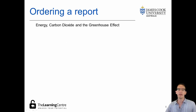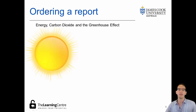Let's imagine that you are writing a report on energy, carbon dioxide and the greenhouse effect. In your reading, you turn up lots of different information from lots of different sources. But when it comes time to write the report, you need to put them in a logical order. So a good place to start might be with the sun and radiation from the sun and the different forms of radiation from the sun.